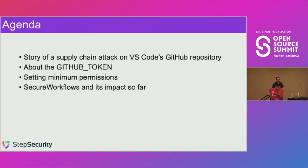So this is what we'll talk about today. We'll talk about a story of a supply chain attack on the VS Code GitHub repository, and that'll lead us to a discussion about GitHub tokens. Then we'll discuss how to set minimum permissions for these tokens, and I'll talk about an open source project called Secure Workflows that can set these minimum permissions automatically.